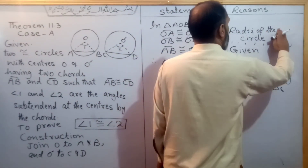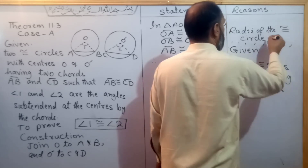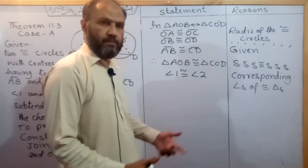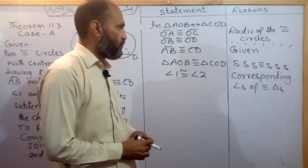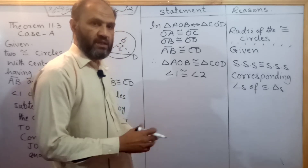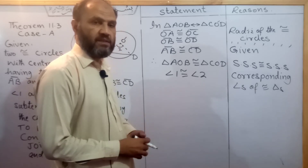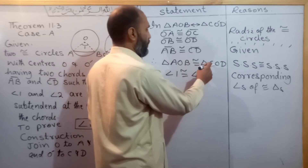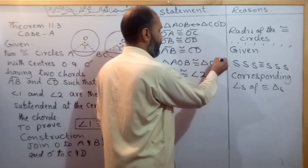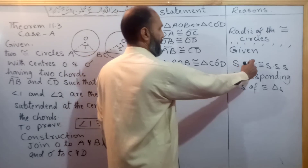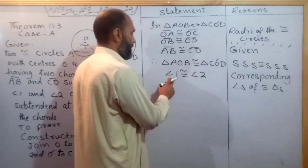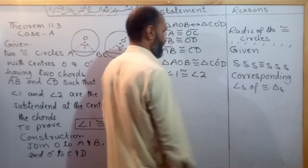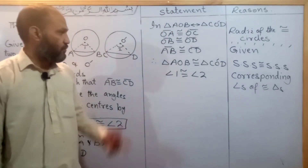The radii of the congruent circles are equal. Since the two circles are congruent, their radii are congruent. Therefore, triangle AOB is congruent to triangle CO'D by SSS. Angle 1 is congruent to Angle 2 as corresponding angles of congruent triangles.